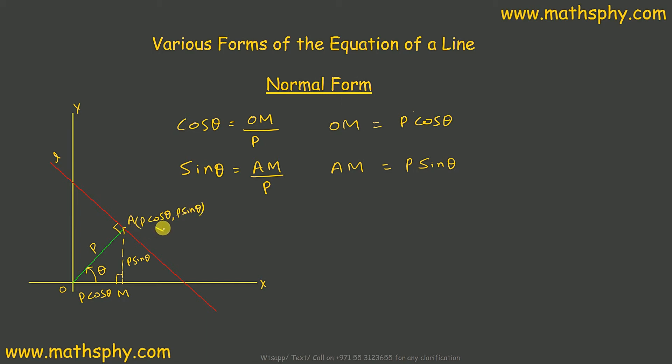Point of coordinates X and Y. Here, X is this, OM, which is P cos theta. Y is this height, which is P sin theta. So, X, comma, Y. Now, P is the distance of this line from the origin.